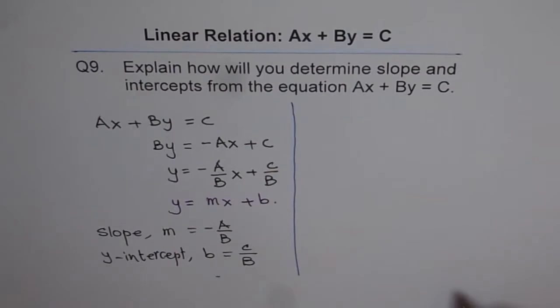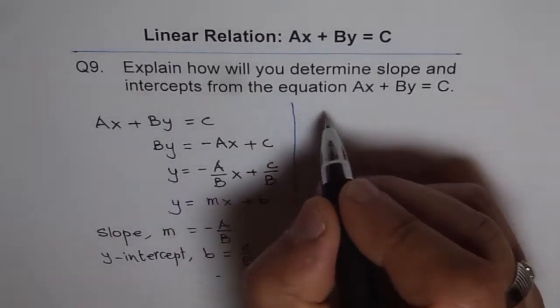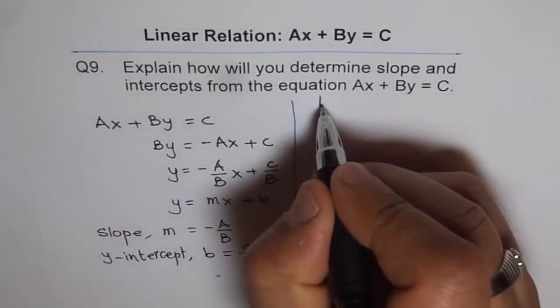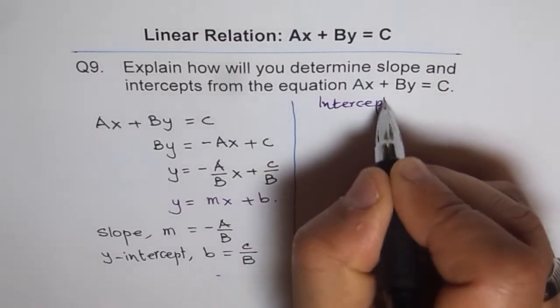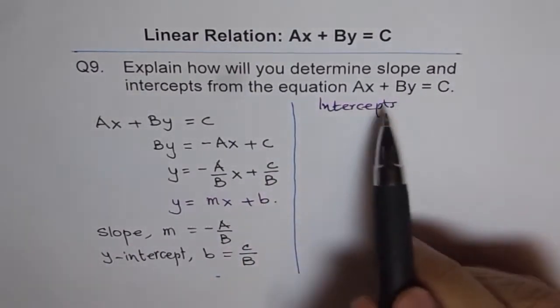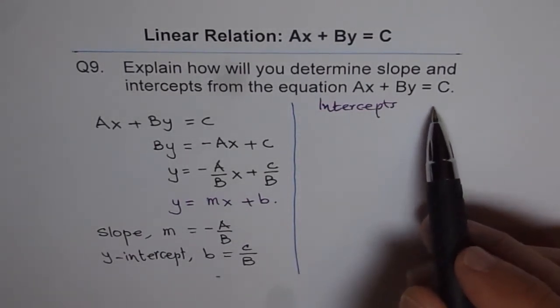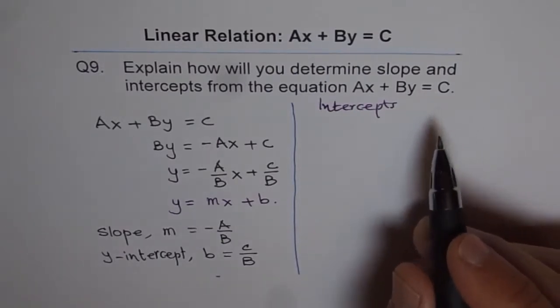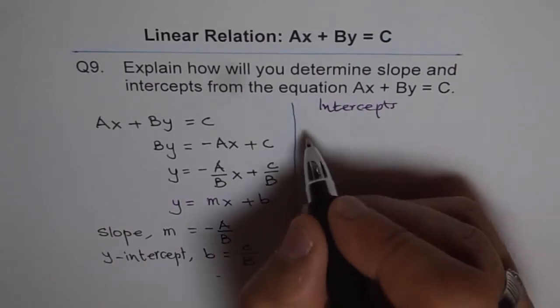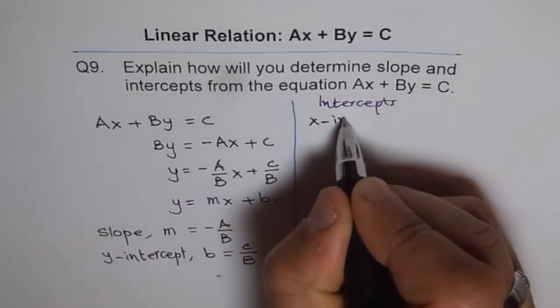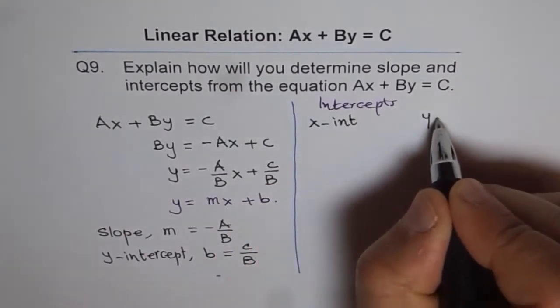Now let's try to individually see how to find intercepts using this equation. In fact, if you are given an equation in the form AX plus BY equals to C, to graph this equation best thing is to find intercepts. Now let's see how to find intercepts and we will consider both X-intercept and Y-intercept.